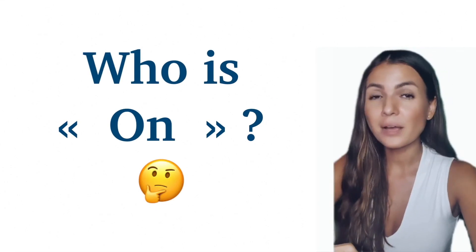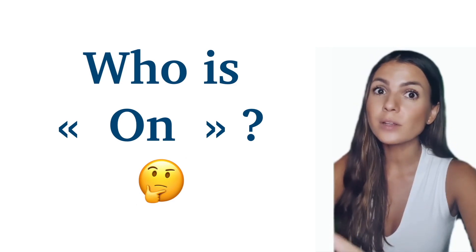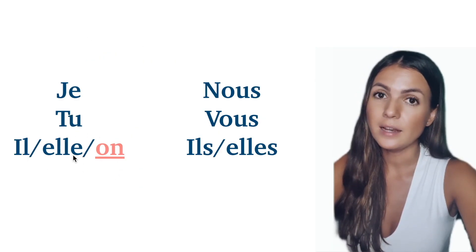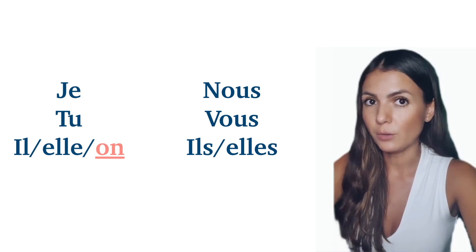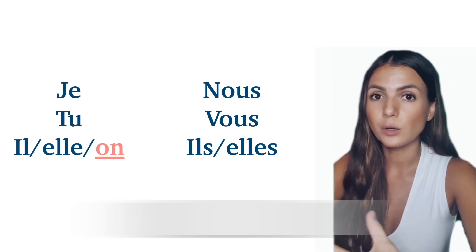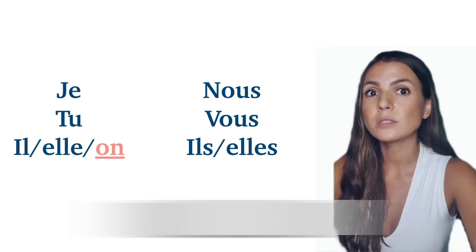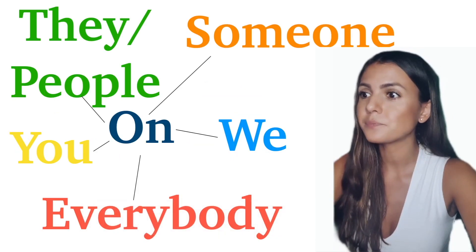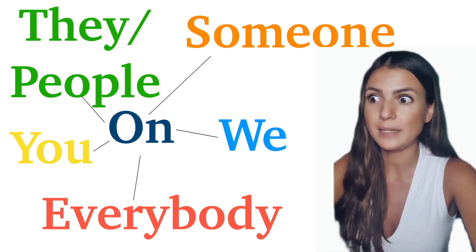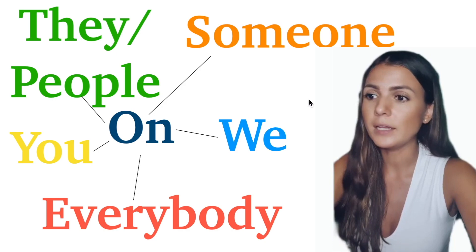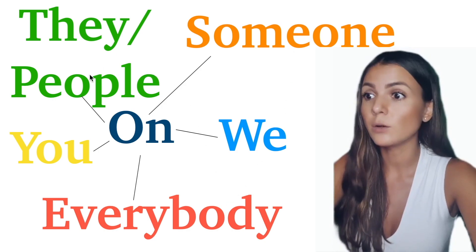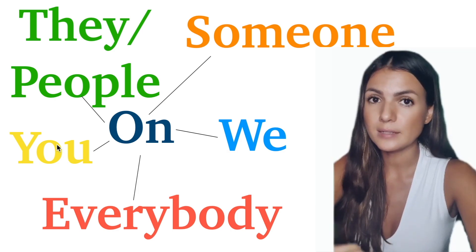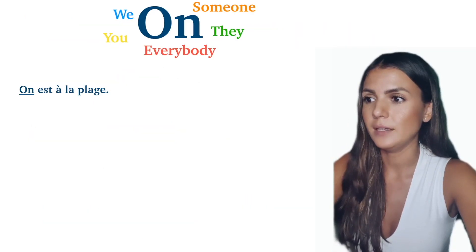Hello guys! In this video I will show you different meanings of the French pronoun 'on'. If you learn French, you already came across this pronoun. You should know already that we conjugate it like 'il' and 'elle' — he, she — so it's an impersonal pronoun. Usually we use it like 'we', but from A2 level you can already come across situations where 'on' doesn't mean 'we'. Actually 'on' can have all these meanings: we, someone, everybody, people, and even you.